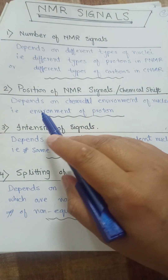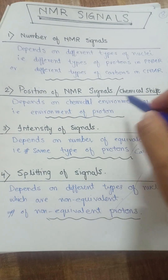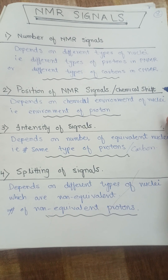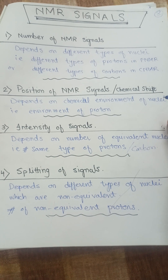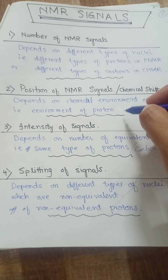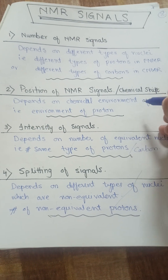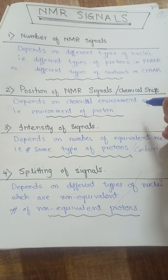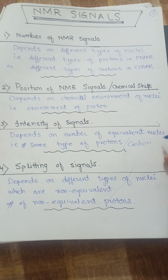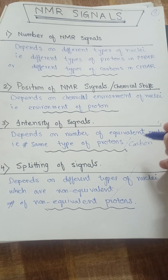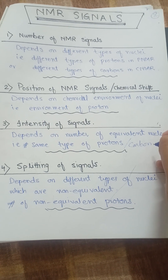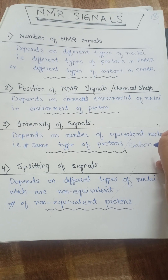The second characteristic is the position of NMR signals, or chemical shift value. The chemical shift value of carbon or proton NMR depends on the chemical environment of the nuclei — that is, the environment of the proton or carbon. The third characteristic is the intensity of the signals. Intensity of an NMR signal depends on the number of equivalent nuclei — that is, how many of the same type of protons or carbons are present.